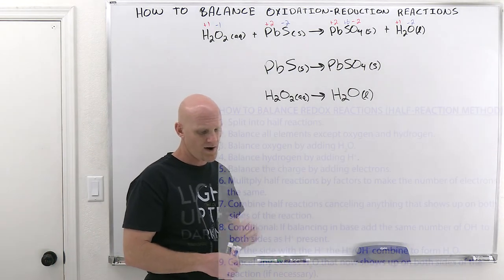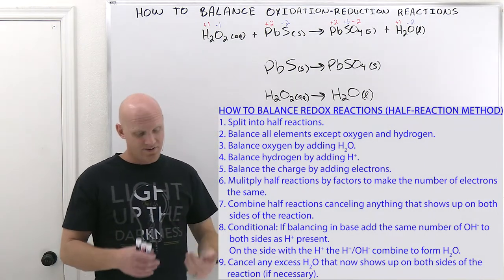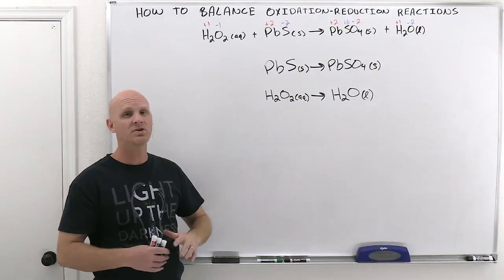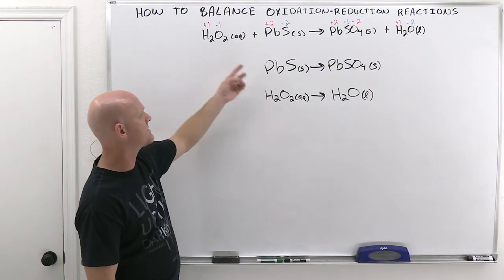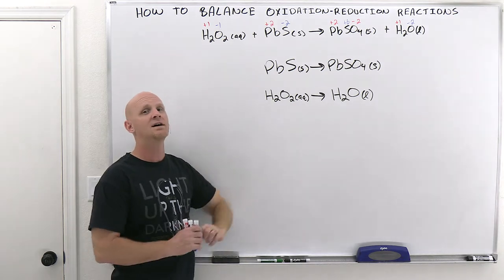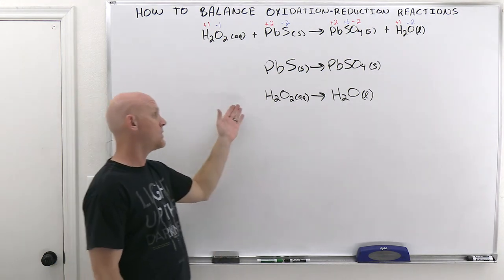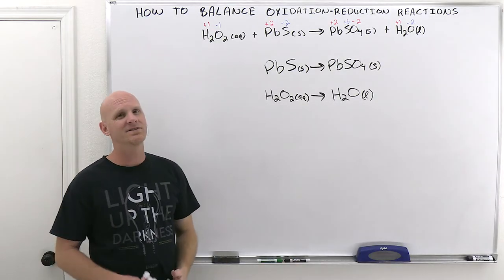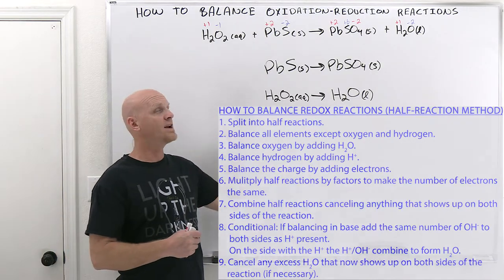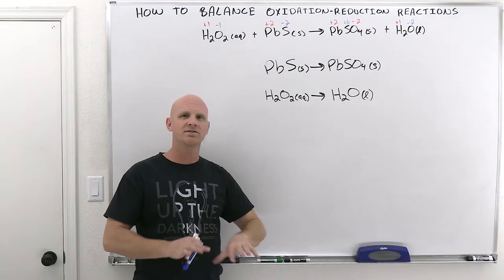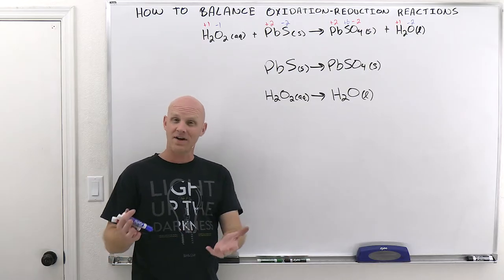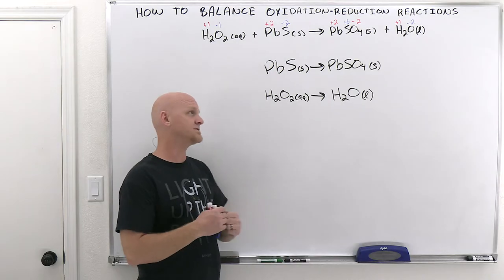Step two: balance all elements except oxygen and hydrogen — save those for last. In the oxidation half, lead and sulfur are balanced; only oxygen remains unbalanced. In the reduction half, all we have is oxygen and hydrogen, so everything else is already balanced. Step three: balance oxygens by adding water. Our redox reactions are always aqueous, so water can show up as a reactant or product, which is why we can always balance oxygens by adding water molecules.